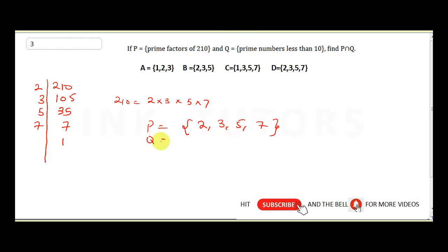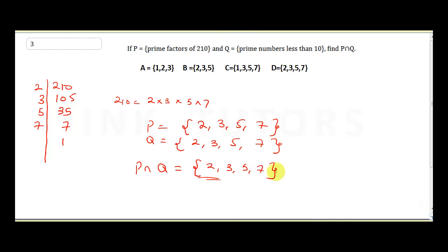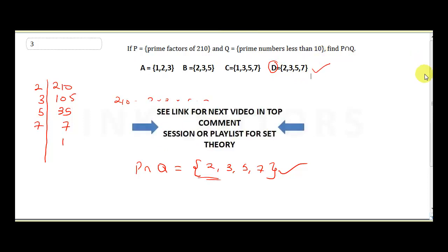While our Q is going to be prime numbers less than 10. So we have 2 is a prime number. 3 is a prime number less than 10. 5 is a prime number less than 10 and 7. So our P and Q are the same. So it says P intersection Q. Remember when we talked about intersection, we said things that are common to both P and common to Q. So since all the elements are repeating themselves, our final answer is going to be 2, 3, 5, and 7. So this is the final answer. So our correct answer here is D. So D is our correct answer. And that will take us to the next question.